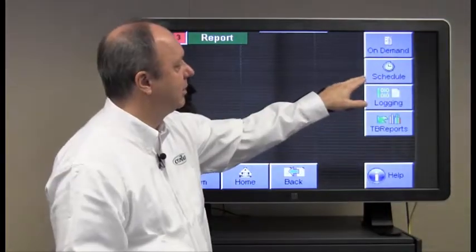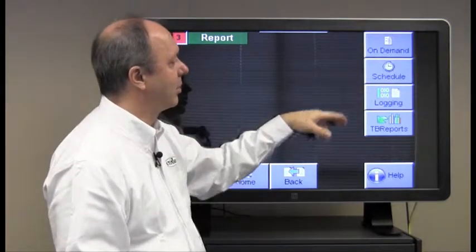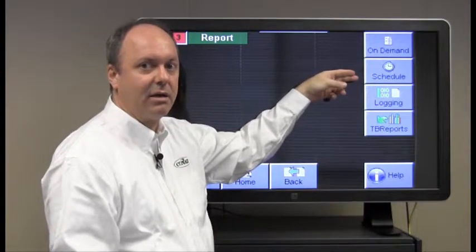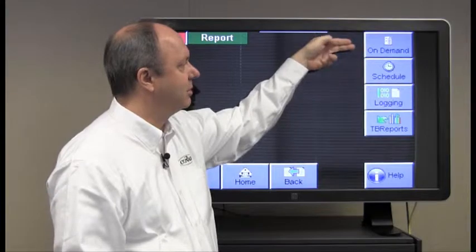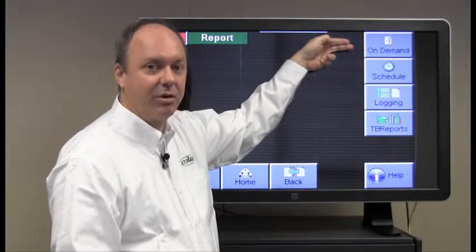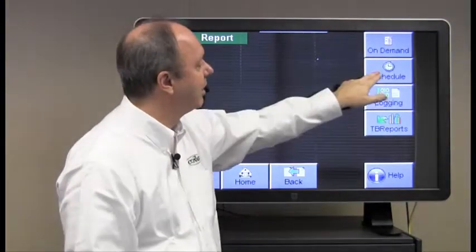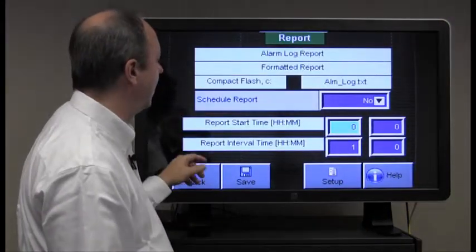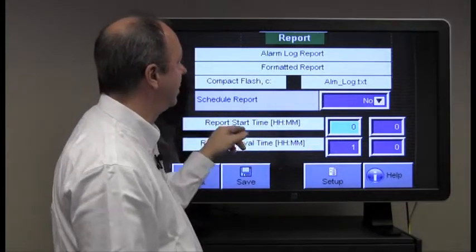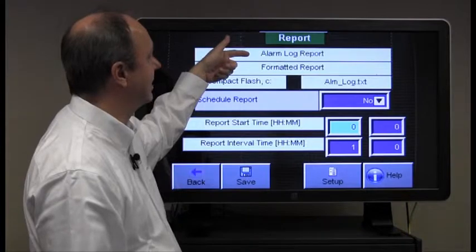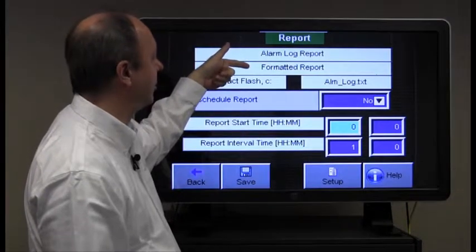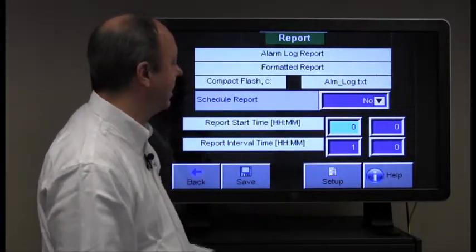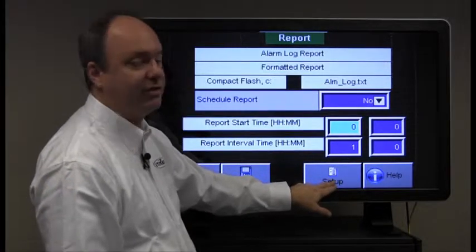So next we'll do the schedule type of report where we want to schedule the start time and how often we'd like a report to come out of the system, as opposed to getting a report immediately on demand, which we already covered. So we press the schedule button for the reports and on this particular page the report type that has been selected is the alarm log and it would be a formatted report. It would go to the compact flash and it would have this name unless we go to setup and choose something different.